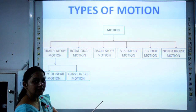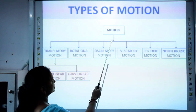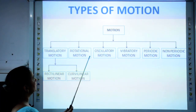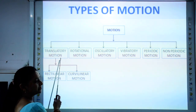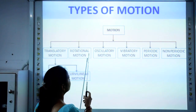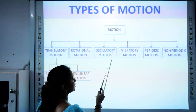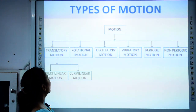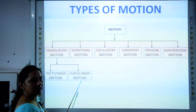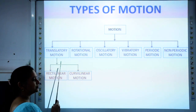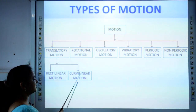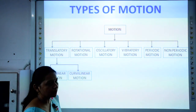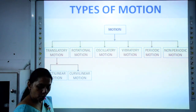Now let us start with the types of motion. A body can undergo different types of motion: translatory motion, rotational motion, oscillatory motion, vibratory motion, periodic motion, and non-periodic motion. Translatory motion is further subdivided into two kinds — rectilinear motion and curvilinear motion. We are going to take these types one by one.